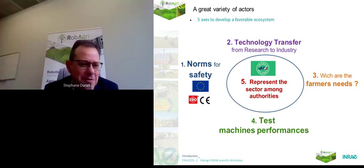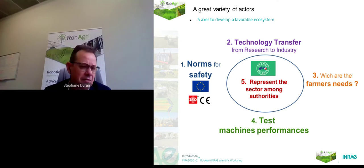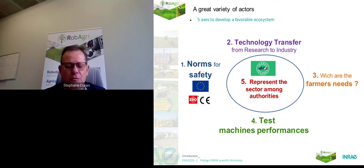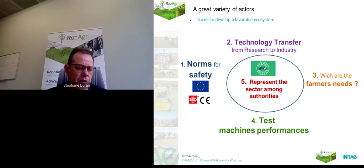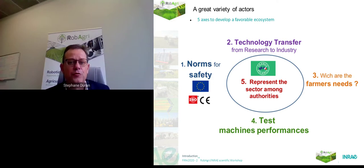Thank you, Roland. What is particular about the Rob Agri Association? We have a great variety of actors and five axes in order to develop a good ecosystem. The first axis is norms and safety — we have done a lot of work on this. The second is working on technology transfer from research to industry. We have a great range of actors ranging from labs to industry and to farmers. The third axis is to see which will be the future farmers' needs.